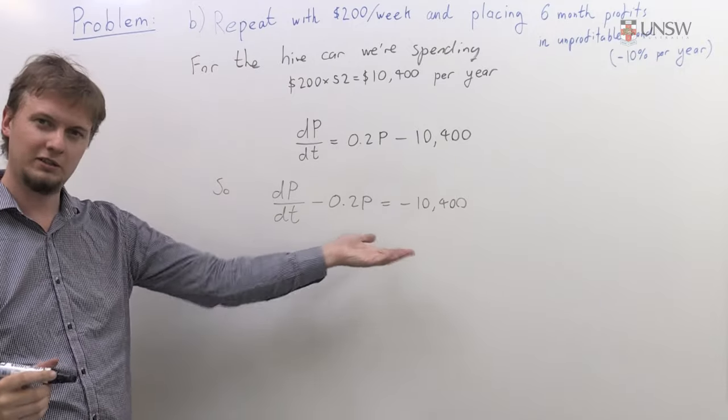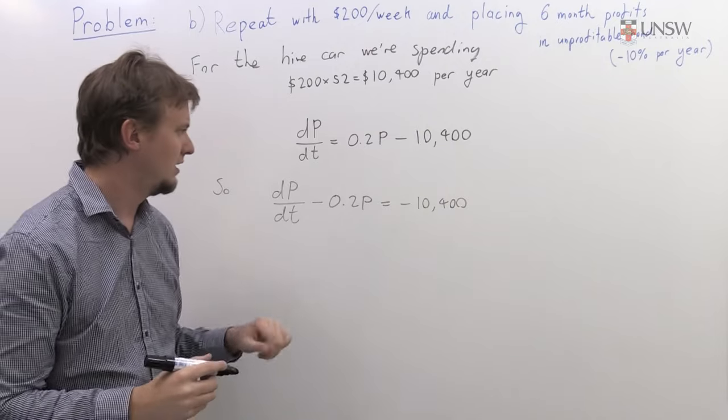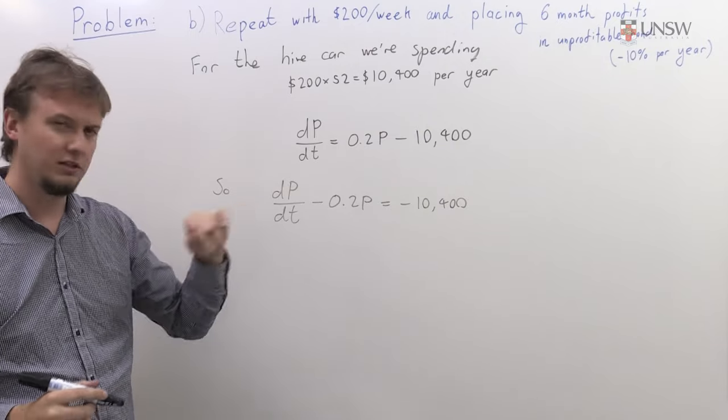If I rewrite it, I get this equation here. And as before, this has integrating factor e to the minus 0.2t.